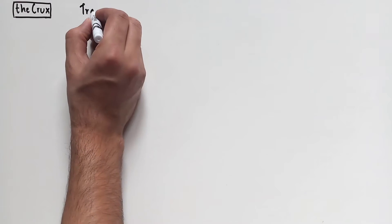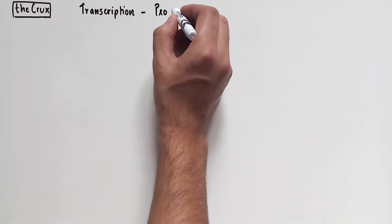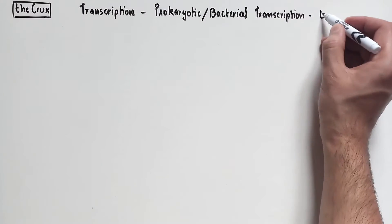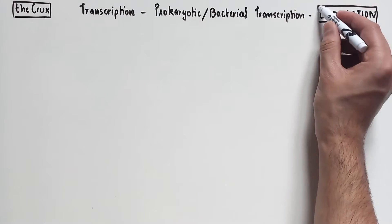Welcome to the Crux. In this video, we're continuing our discussion on prokaryotic transcription, where we focus primarily on the second step, the process of elongation.